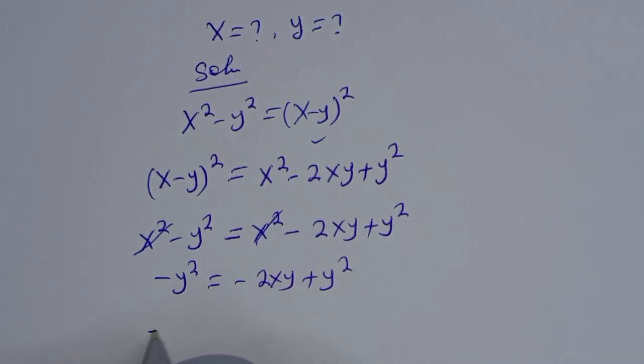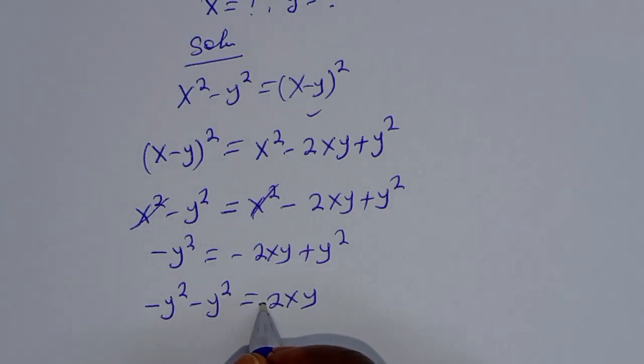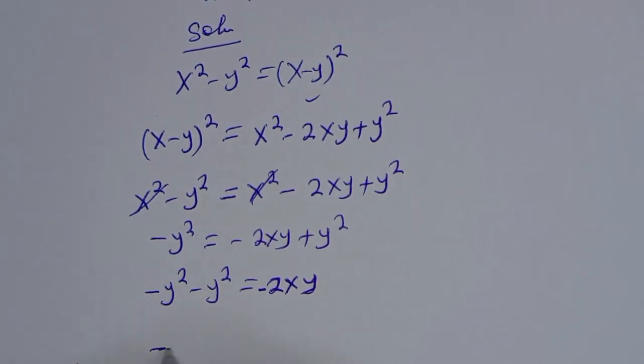Then here minus y squared minus y squared is equal to minus 2xy. Then this is minus 2y squared is equal to minus 2xy.